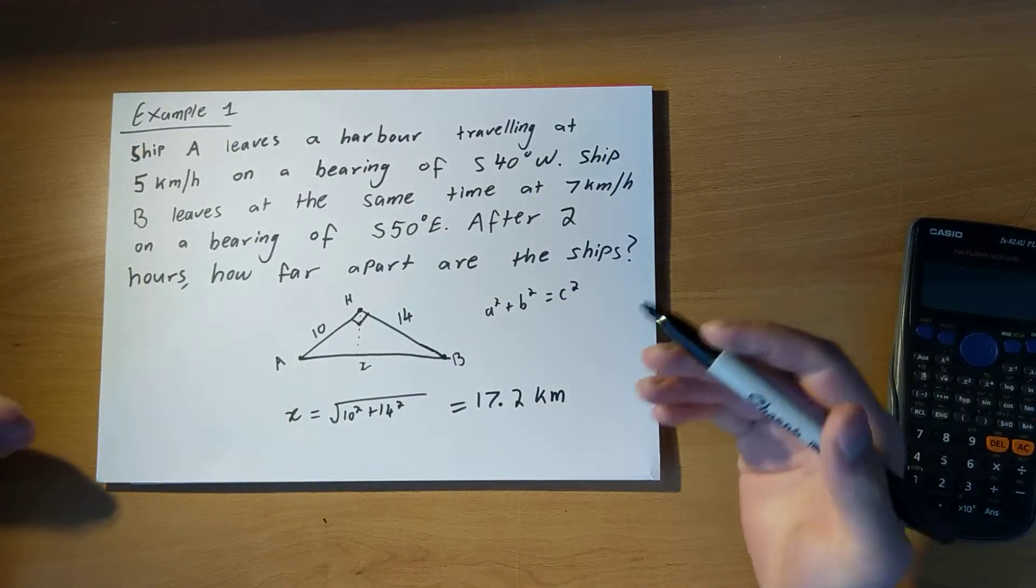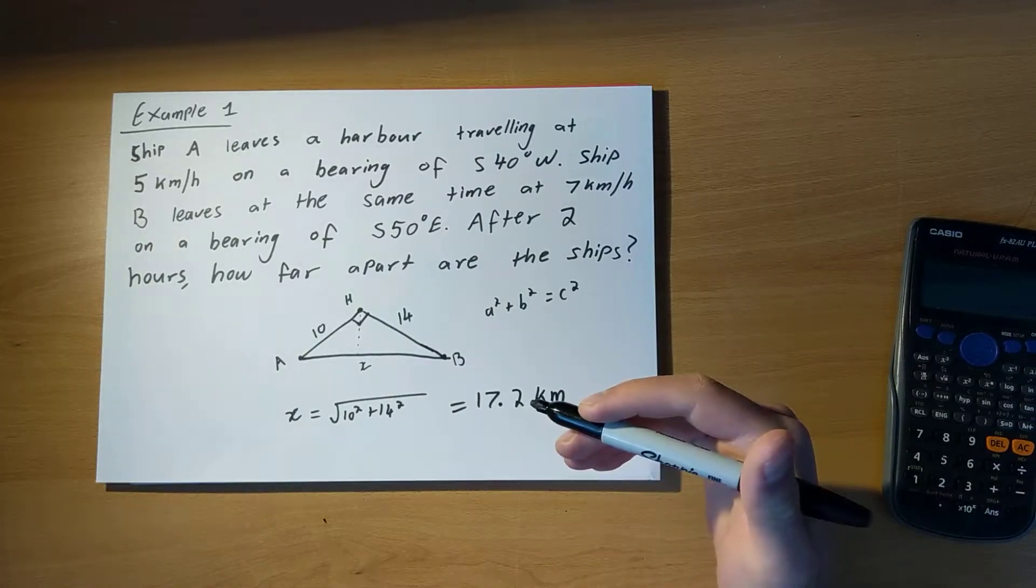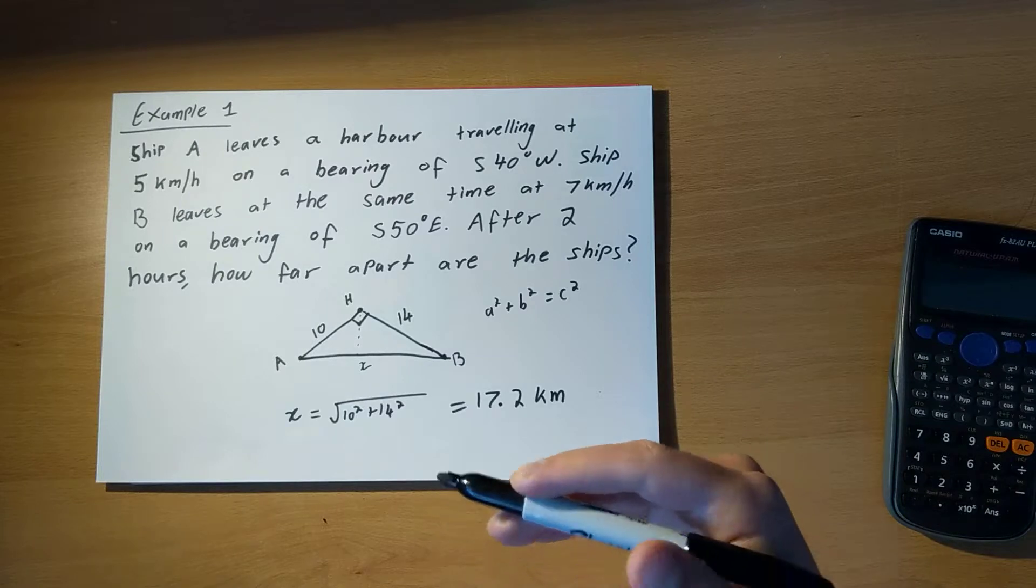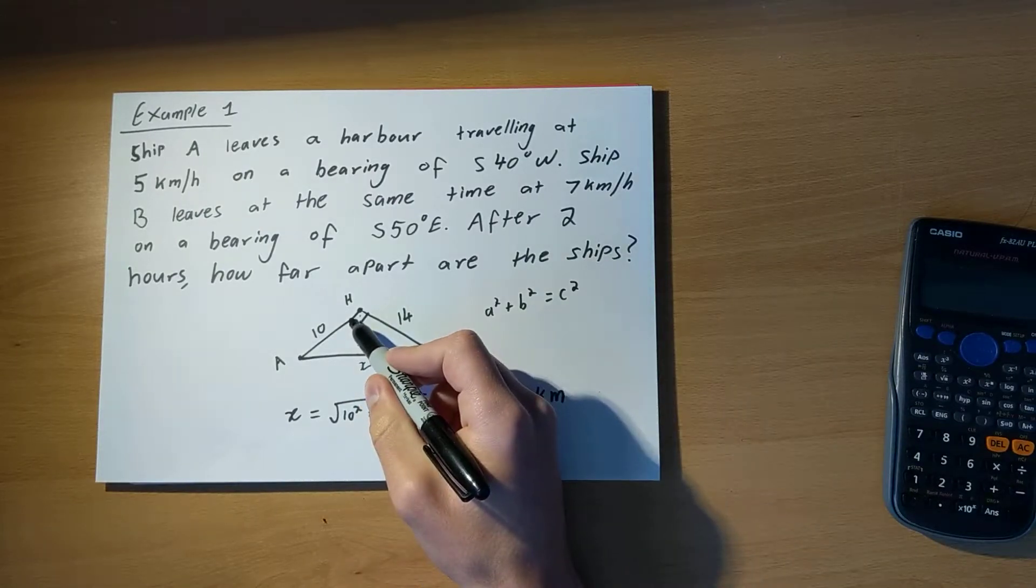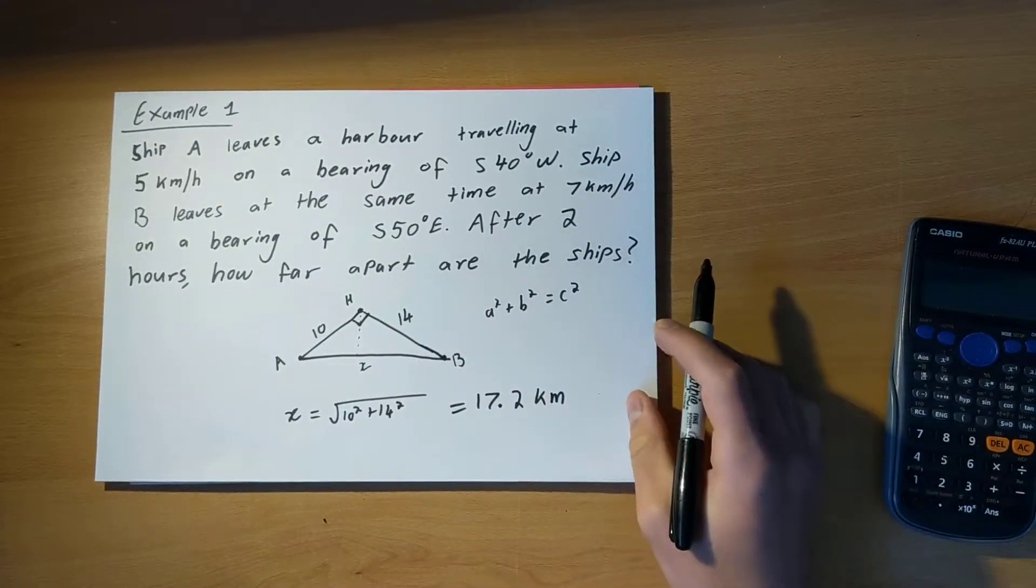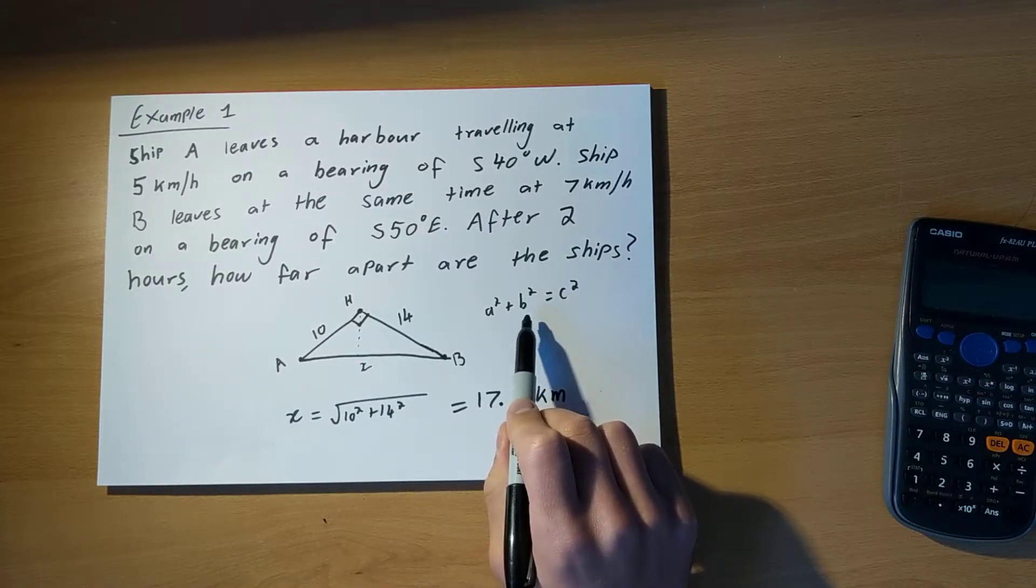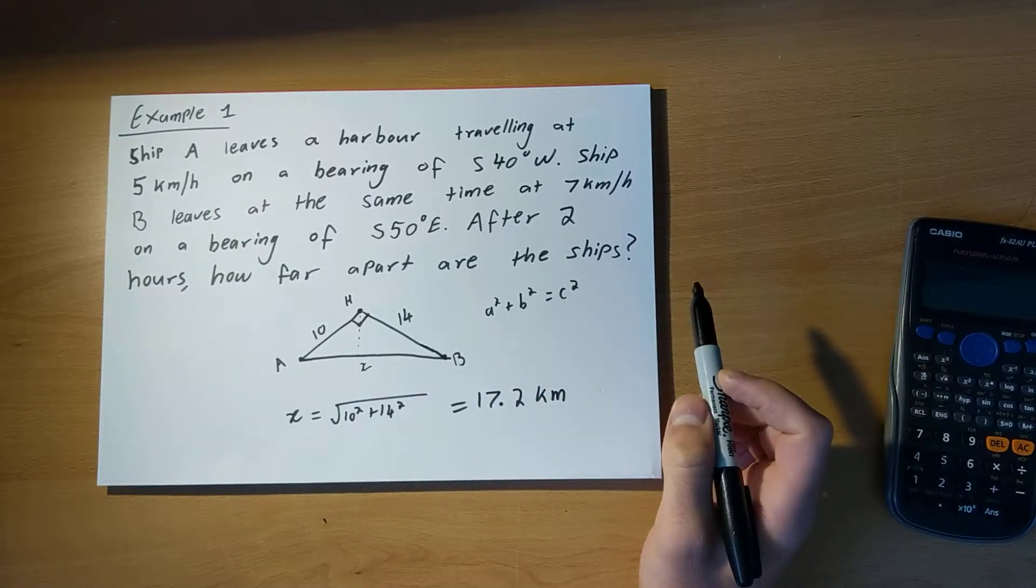There we go. So the steps I've taken to solve this is, first of all, draw a diagram. Second of all, look for anything that's going to help me answer the question. In this case, look for the right angle. And then thirdly, use that information to write my formula that I'm going to use and solve for the unknown.